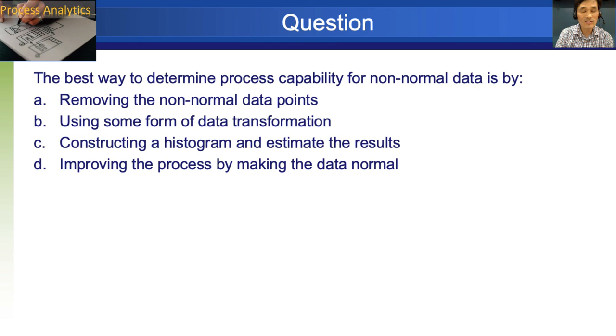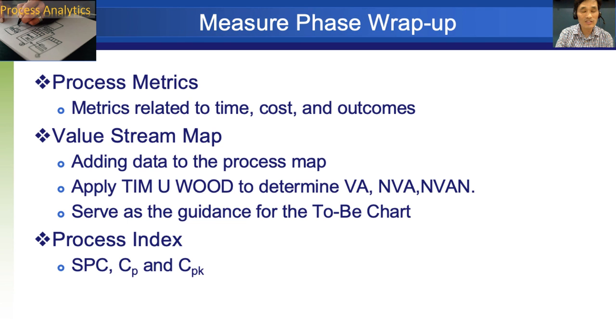Next question. The best way to determine process capability for non-normal data is by A, removing the non-normal data. B, using some form of data transformation. C, constructing a histogram and estimate the result. D, improving the process by making the data normal. The answer is transforming the data. B.